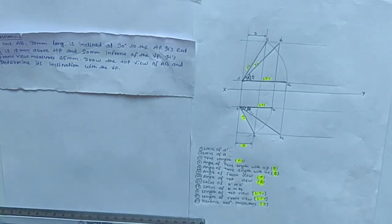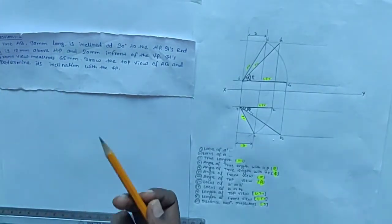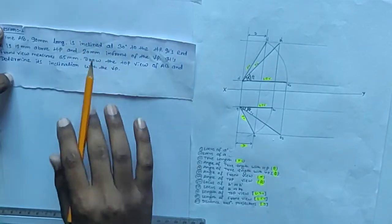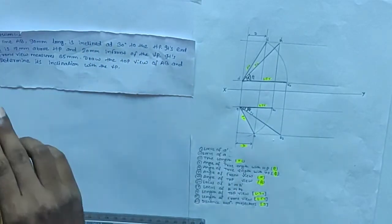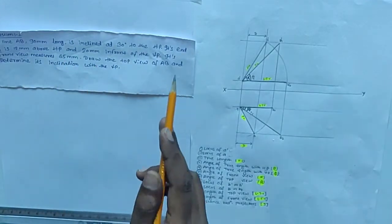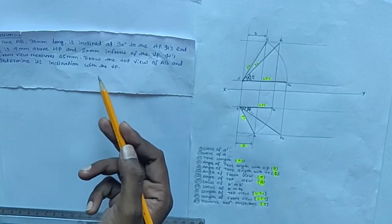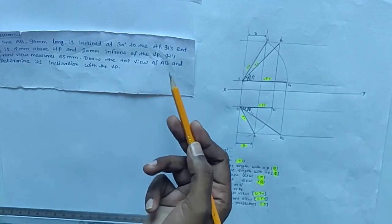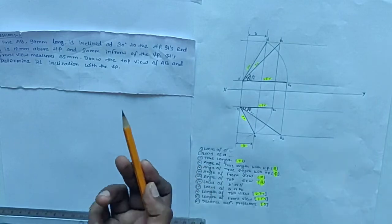Today we are going to solve a question on projection of a straight line. A line AB, 90mm long, is inclined at 30 degrees to the HP. Its end A is 12mm above HP and 20mm in front of VP. Its front view measures 65mm. Draw the top view of AB and determine its inclination with VP.